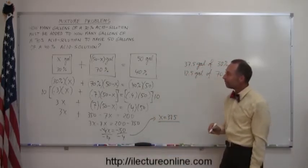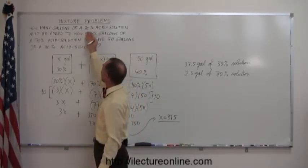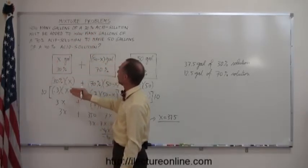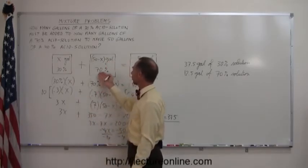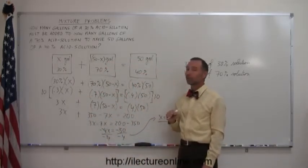So, quick recap. You read the problem carefully. You recognize you're adding two mixtures together. One mixture is 30%, the other mixture is 70%, and you want finally to end up with a mixture that's only 40%.